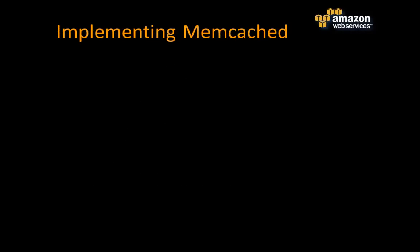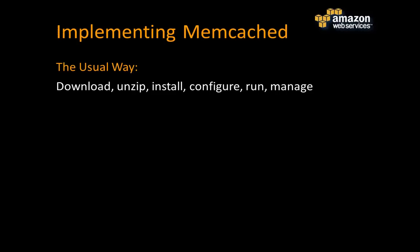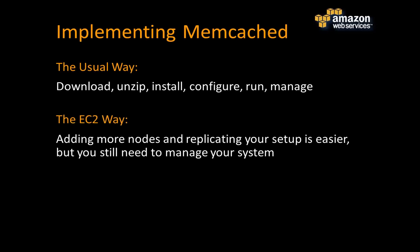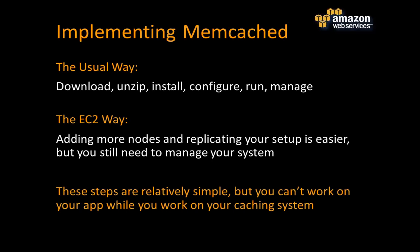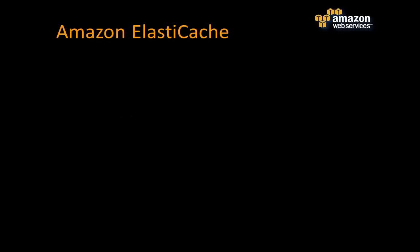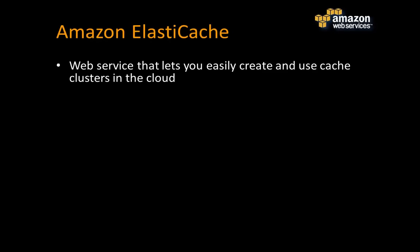If you're implementing Memcached today by yourself, you'd download software, install libraries on your client, install software on the server, configure it, run it, and manage it. You can also do this on EC2 — adding nodes and replicating setup is somewhat easier, but you're still spending time managing your cache rather than working on your application. We believe there's a better way: Amazon ElastiCache, a web service that lets you easily create and use caching clusters in the cloud.